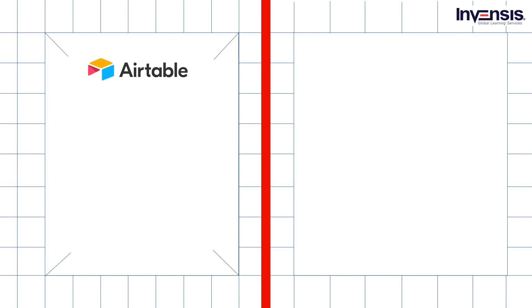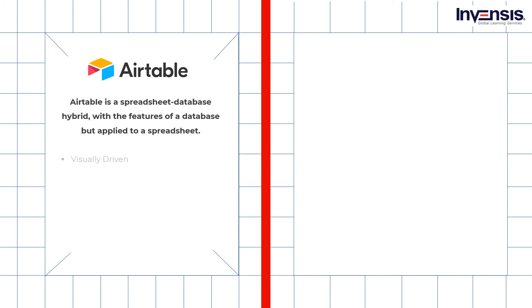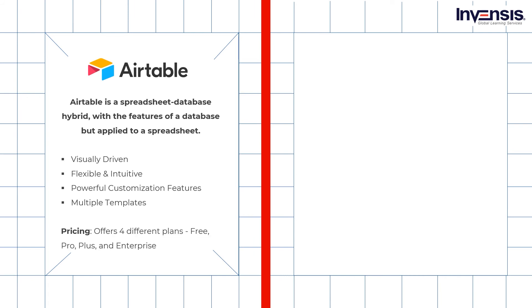Next up we have Airtable. A project management tool like Airtable on the surface might seem like a regular spreadsheet, but it can actually expand to become a fully-fledged database. One of the biggest advantages of using Airtable is that it is very visually driven and is so flexible and intuitive to use. Additionally, it also offers powerful customization features. Airtable looks a lot like a spreadsheet but it is much more powerful, and it provides plenty of templates to choose from that'll give you the framework you need. Airtable has four plan types: free, pro, plus, and enterprise. Airtable offers a free version of the software, which is better than some project management software vendors.